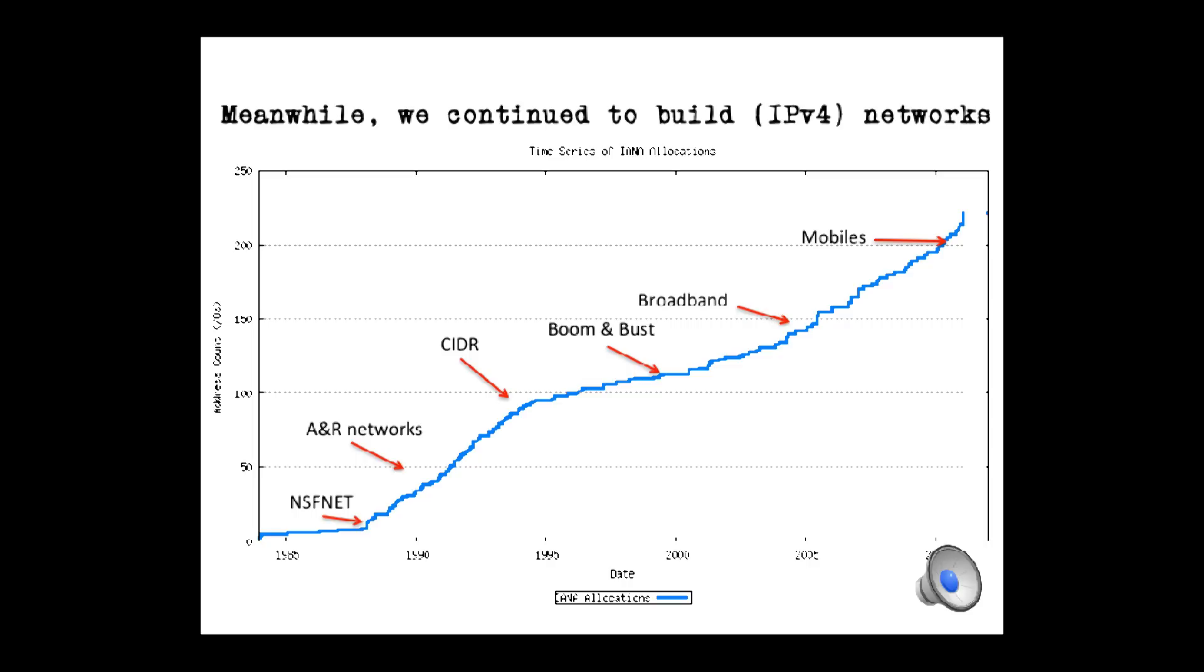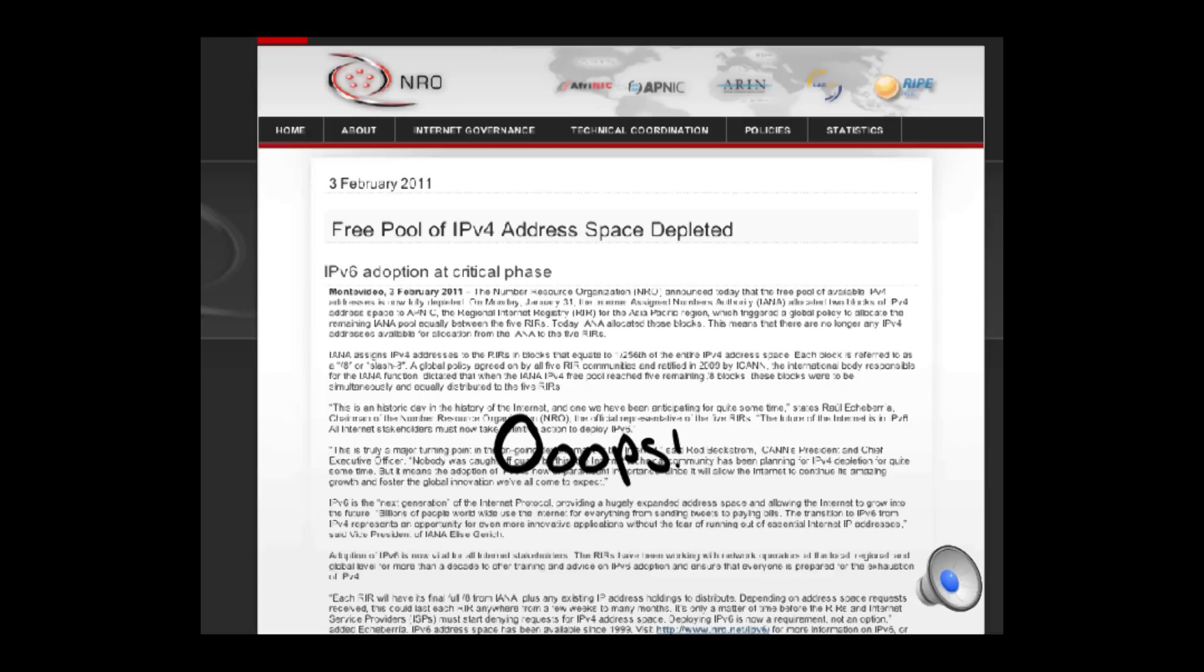But even that wasn't quite enough. Because in the mid-2000s, we also started the next thing, which was mobiles. And if we had any theory that addresses would last for a long time, the mobile industry said, No, you are completely wrong. We are going to give everybody a mobile with IP. And they started. And all of a sudden, that IPv4 address bank that was going to last for 50 years wasn't. Because all of a sudden, we hit exhaustion.